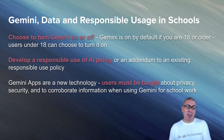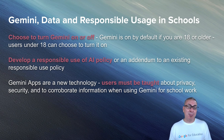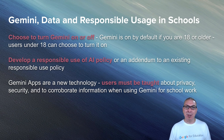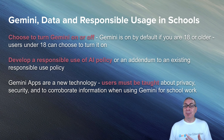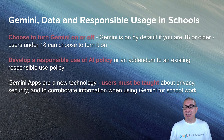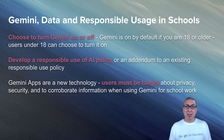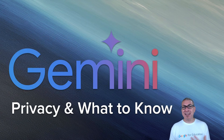Schools should choose whether to turn Gemini on or off, and if it's on, determine who uses it. Develop a responsible AI use policy or add an addendum to an existing technology policy. Keep in mind this is new, emerging technology and things are changing quickly. Users must know how it works, about privacy and security, and if they're using it for schoolwork, corroborate with other sources of information — it's not perfect. Take time to learn about Gemini privacy and security and make the experience enjoyable for your constituents.